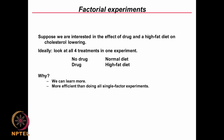I mentioned 2 parameters: one is the drug and the other is the diet, each at 2 levels. Drug has levels of no drug and drug; diet has normal diet and high fat diet. So we could conduct 4 experiments: no drug with normal diet, no drug with high fat diet, drug with normal diet, and drug with high fat diet.